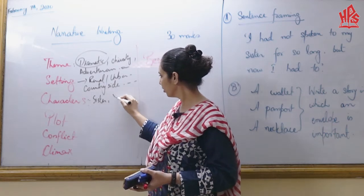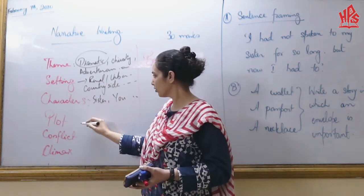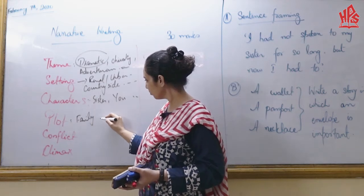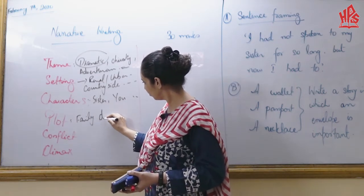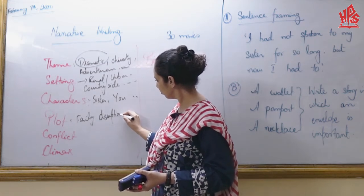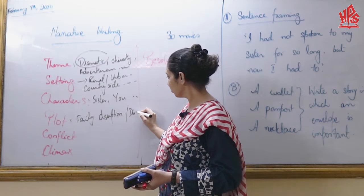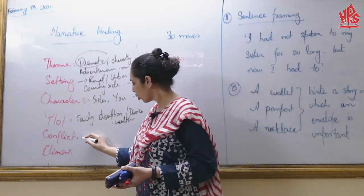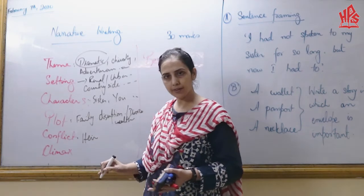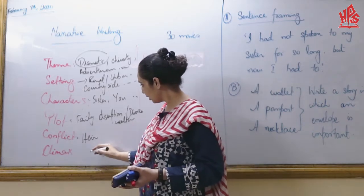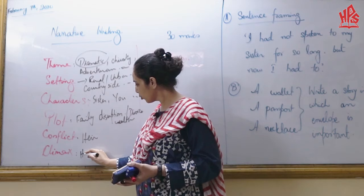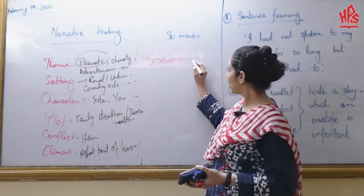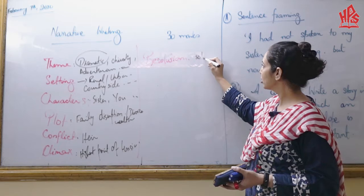Characters here are the sister, you, and any related female figure. For the plot, there could be family disruption — it could be divorce, it could be wealth distribution, anything of that sort. The conflict is obvious — you are the narrator. The climax is the highest point of tension. And lastly, you talk about how you provide a kind of solution or resolution to it.